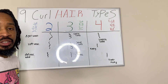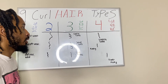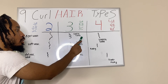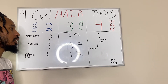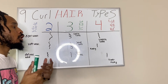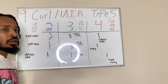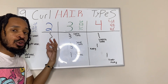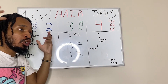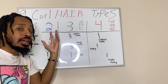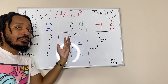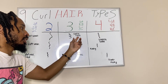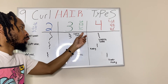Now that brings us to type 3A curl — the classic curl. The classic curl is just a looser curl in circumference. So if you've ever seen someone with a bigger afro where you can see the curls but it looks a lot looser, just bigger and fuller, that means it's most likely the classic curl, the 3A.